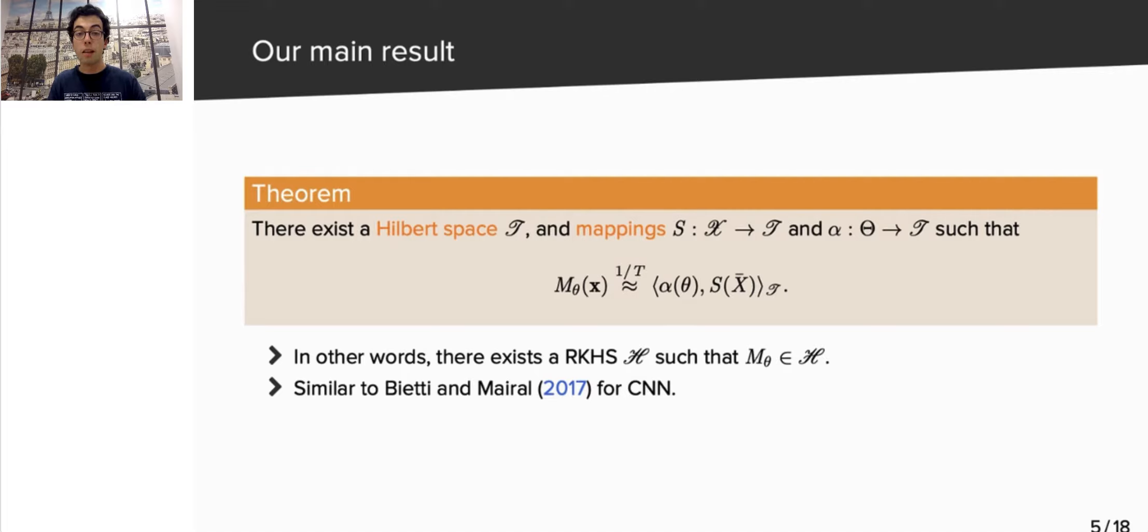The crucial idea here is that we are able to express the RNN as a scalar product, where we separate the data representation, S of X, from the RNN parameters alpha of theta. In other words, we found a feature map for our data, S of X, which is called the signature, such that the action of the RNN is linear on those features. This is exactly the setting of a kernel method.